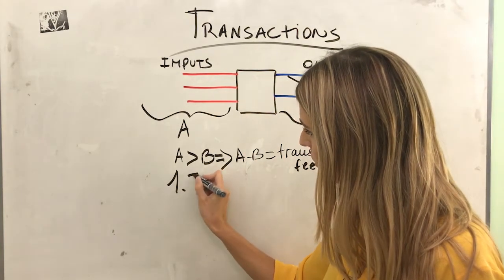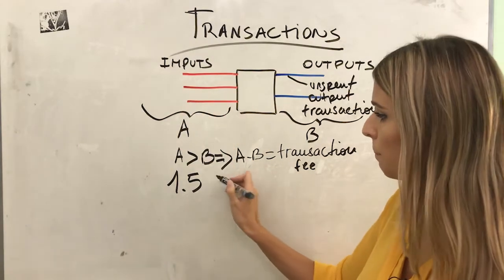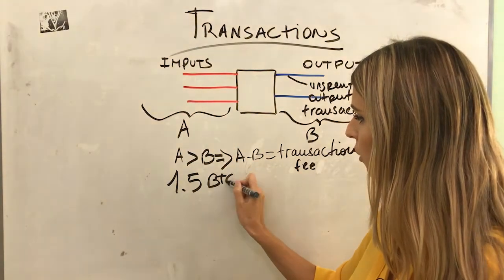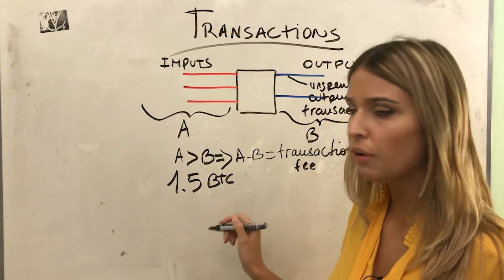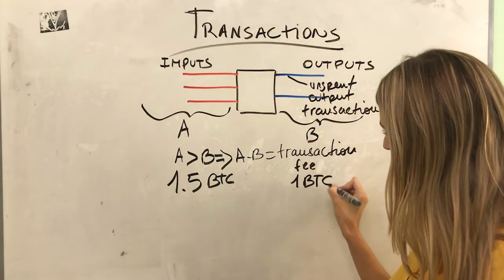Let's put numbers. Let's say that the sum of my inputs is 1.5 Bitcoin and I want to send my friend one Bitcoin here.